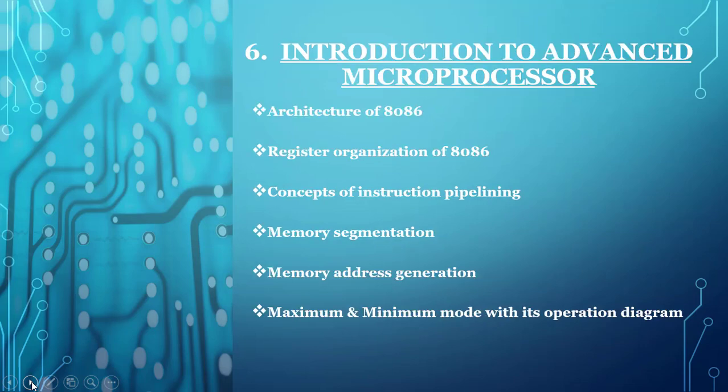The sixth unit is Introduction to the Advanced Microprocessor. The 8085 is an 8-bit microprocessor used only for small industrial applications, and it had a number of limitations — for instance, it did not support multiplication and division. The 8086 microprocessor overcomes all these limitations, allowing you to perform tasks that 8085 wasn't able to perform. This unit will cover the architecture of 8086, register organization of 8086, concept of instruction pipelining, and maximum and minimum mode with its operation. I hope this roadmap is very clear to you all. Thank you.